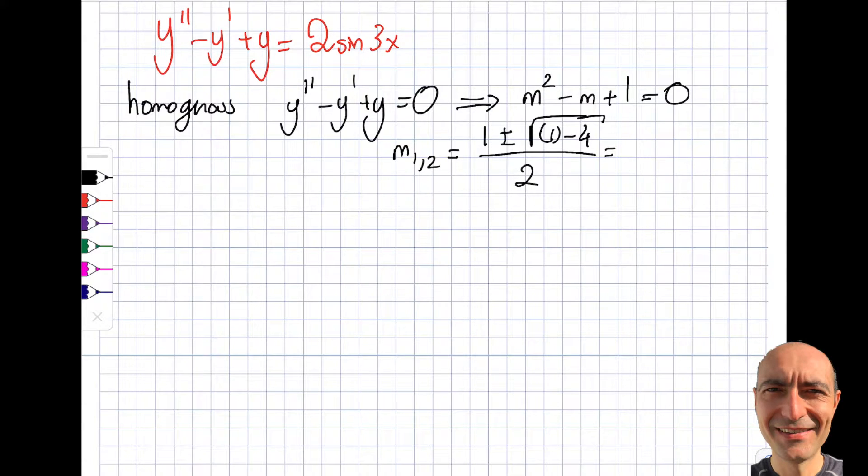So when I'm all set and done, I'll get myself one half plus minus square root of 3 by 2. Obviously because it's a complex number. 1 minus 4 is square root of minus 3.